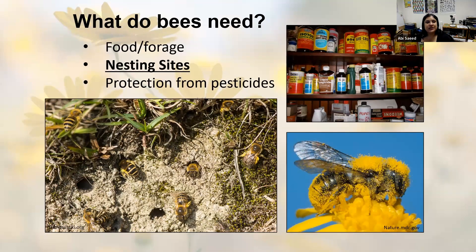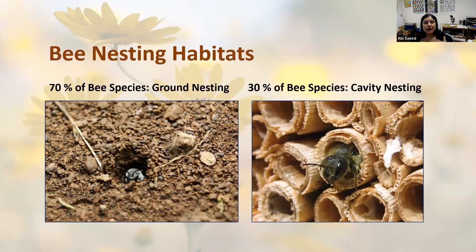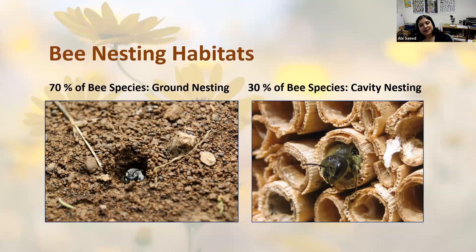Now let's move on to nesting sites. About 70% of bee species are ground nesting — they build nests within the ground by digging or using existing cavities. Bumblebees are an example. The remaining 30% are cavity nesting bee species, which usually nest above ground and use pre-existing cavities, although a couple create their own. Carpenter bees are an example of this.